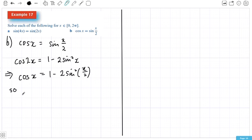So, therefore, we've got the cos(x) here replaced with 1 minus 2 sine squared x over 2. So we're going to replace cos(x). So we've got 1 minus 2 sine squared x over 2 equals sine of x over 2.